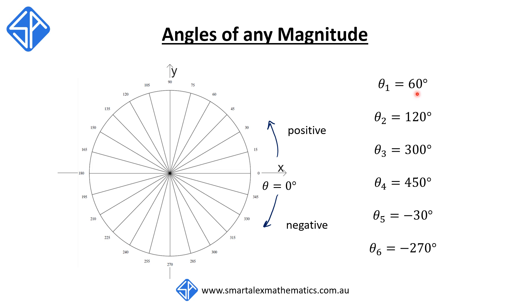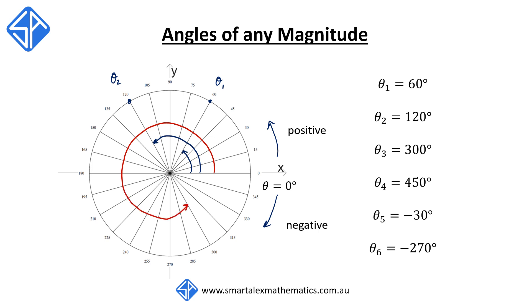The first angle: theta 1 is equal to 60 degrees. This is a positive angle, so we're going to start at theta equals 0 degrees and rotate anticlockwise for 60 degrees, and this point here corresponds to theta 1, 60 degrees. Next, theta 2 is equal to 120 degrees. Again, this is a positive angle, so we begin at 0 and rotate anticlockwise for 120 degrees. This point here corresponds to theta 2 of 120 degrees. Next, theta 3 is equal to 300 degrees — we begin at 0 and rotate anticlockwise for 300 degrees, and that takes us to this point, so theta 3 corresponds to 300 degrees.